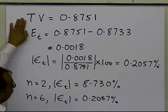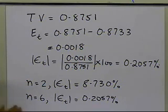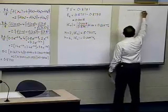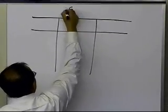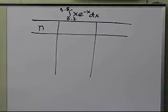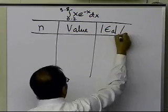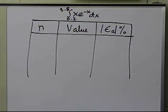So what we want to be able to do is see whether, by increasing the number of segments — going from 2 to 4 to 6 to 8 — we can use that knowledge to figure out how accurate our answer is. What I have done is used Simpson's one-third rule with multiple segments and made a table of what I get as the value of the integral for the same integral from 0.2 to 3.8 of x e to the power minus x dx, and I calculate the relative approximate error. Nowhere am I using the true value to calculate the relative approximate error.